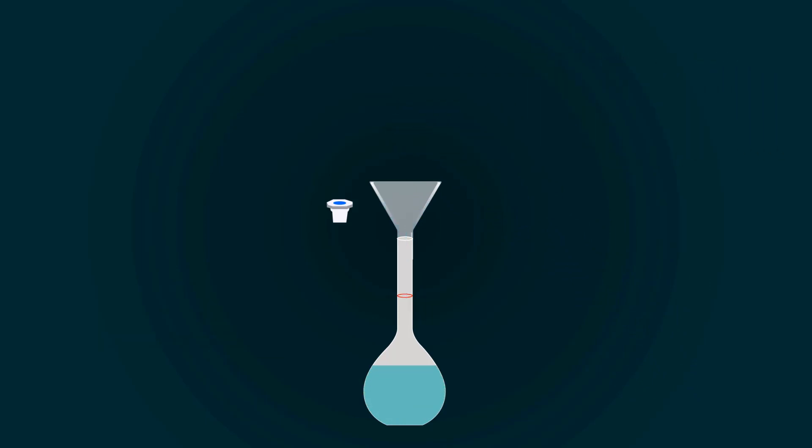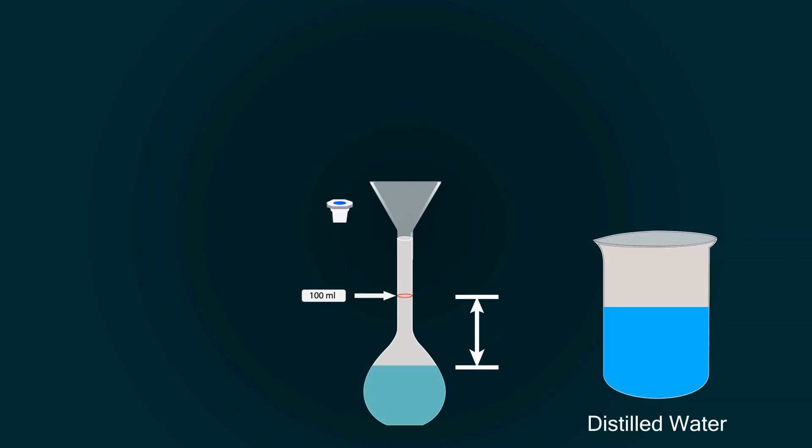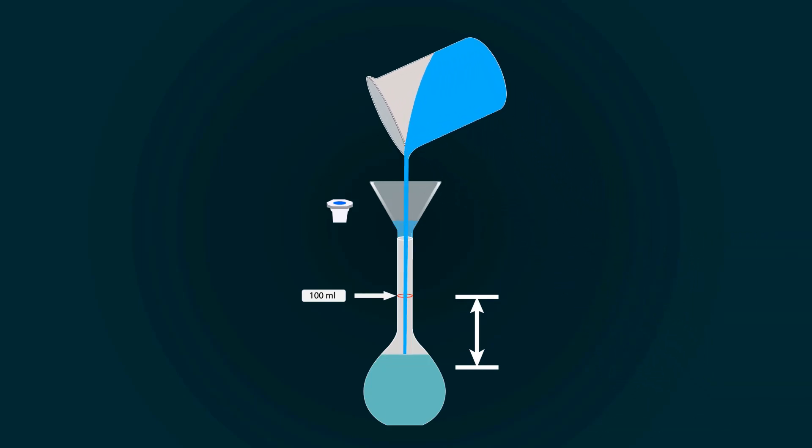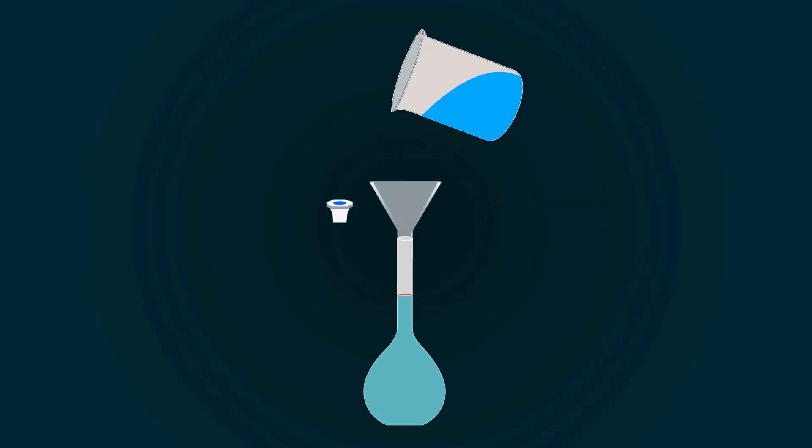You have to fill the volumetric flask up to the 100 milliliters point. For that, you have to add more distilled water. So take more distilled water into an empty beaker and start pouring it into the volumetric flask.